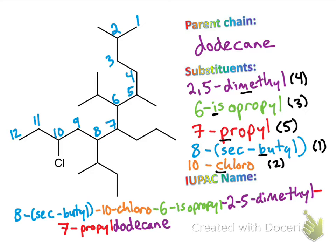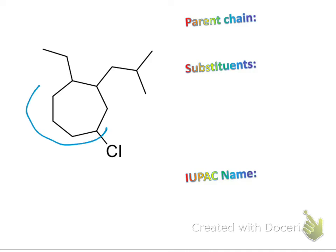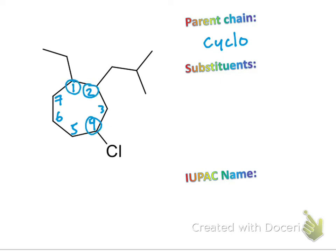Here we have a cycloalkane, as evidenced by the ring, which means when we name this we're going to include the word — hear me out — cyclo. Since our longest chain has to include our ring, we number the ring so that we minimize the substituent numbers: 1, 2, 3, 4, 5, 6, 7. This way we have substituents at 1, 2, and 4. If we started from the chlorine instead, we'd get 1, 2, 3 — but 1, 2 is better than 1, 3, so the inner numbering wins.